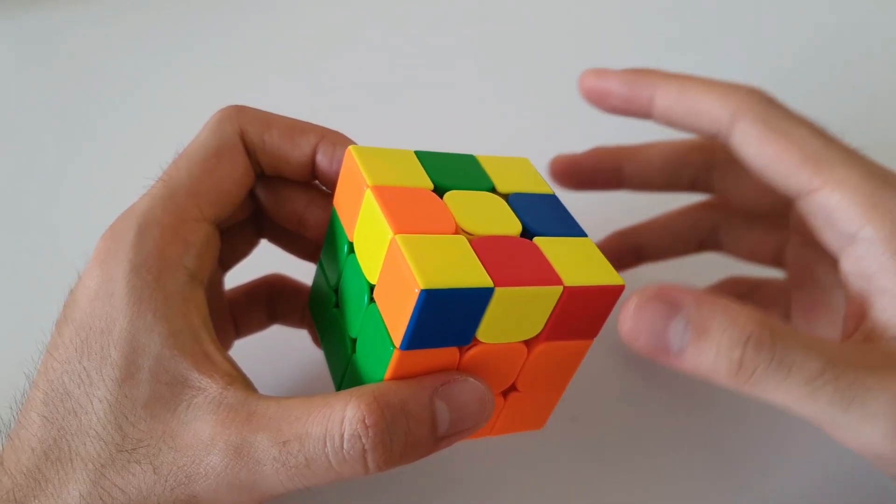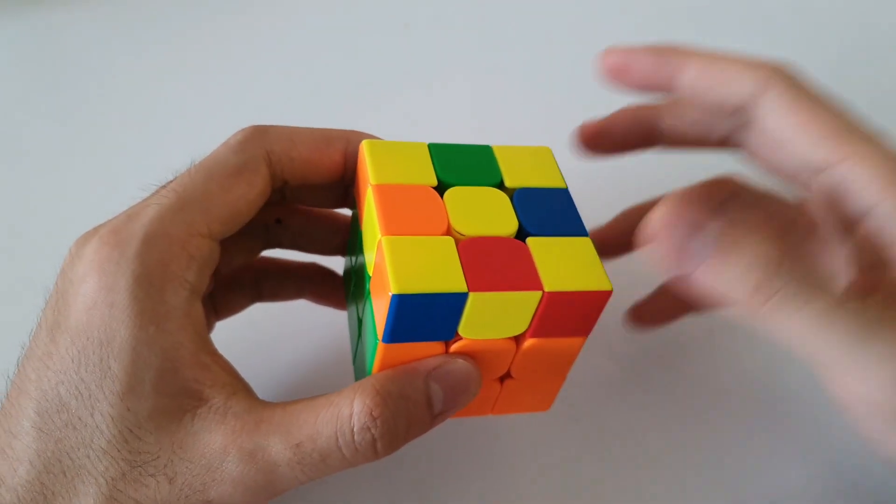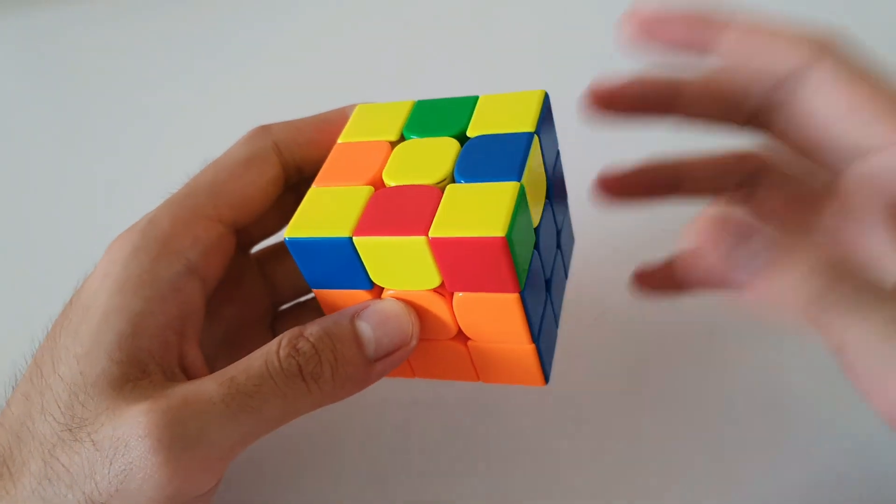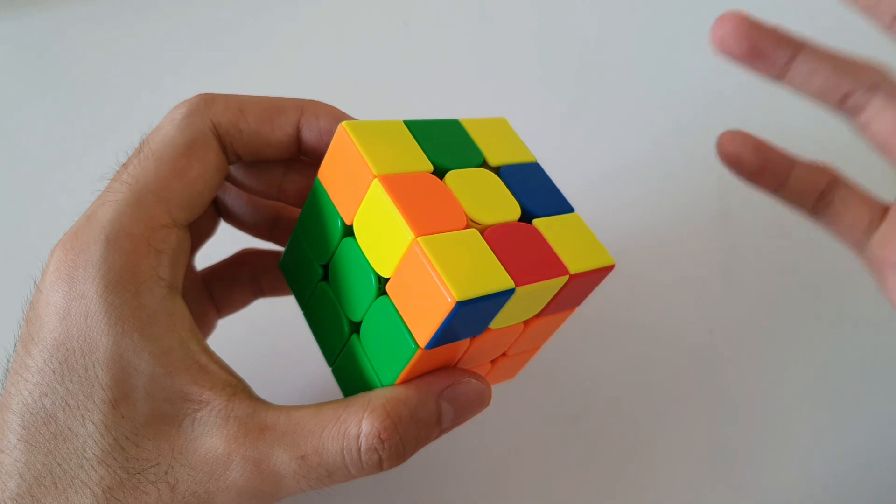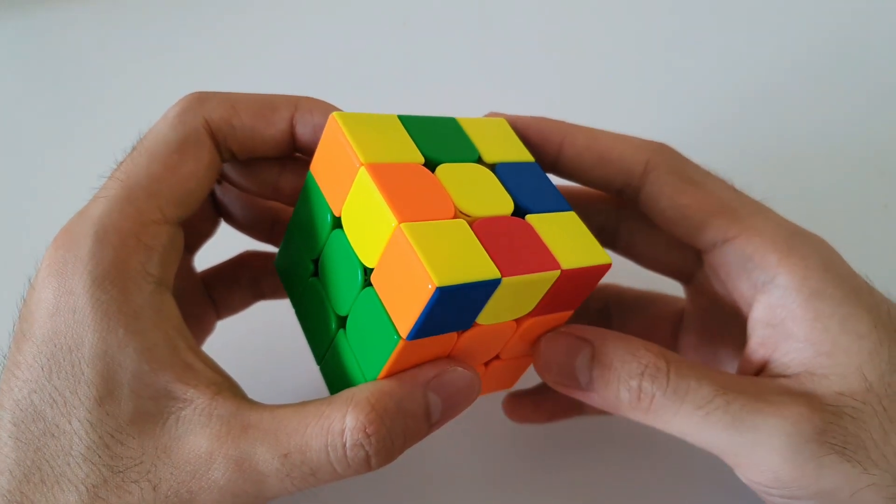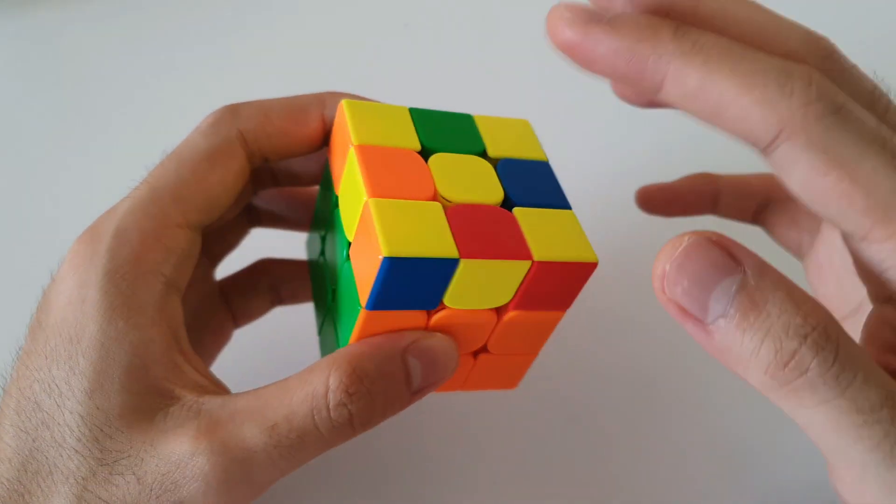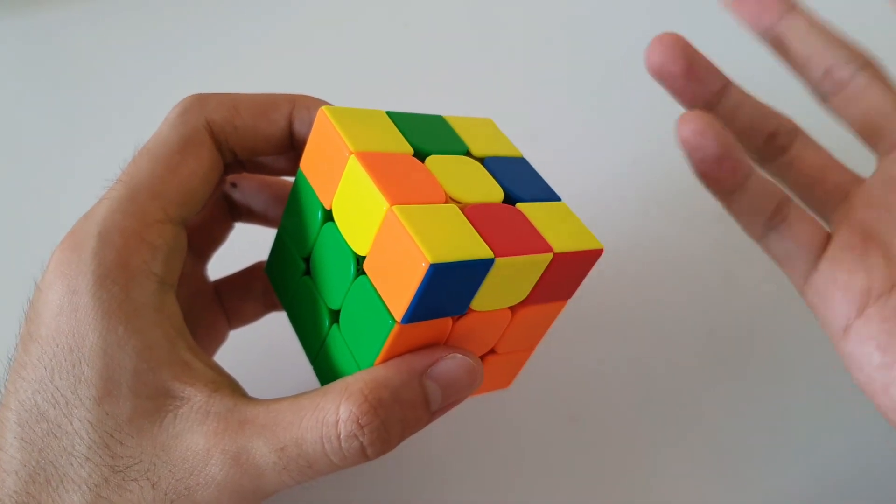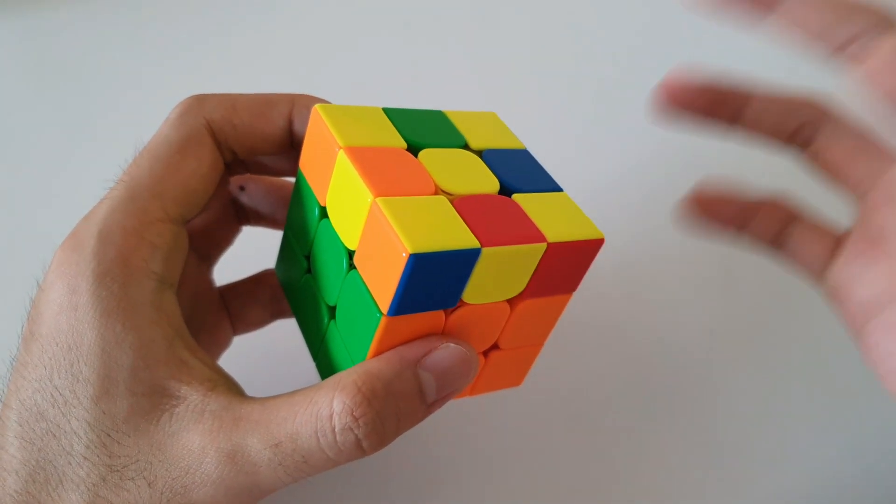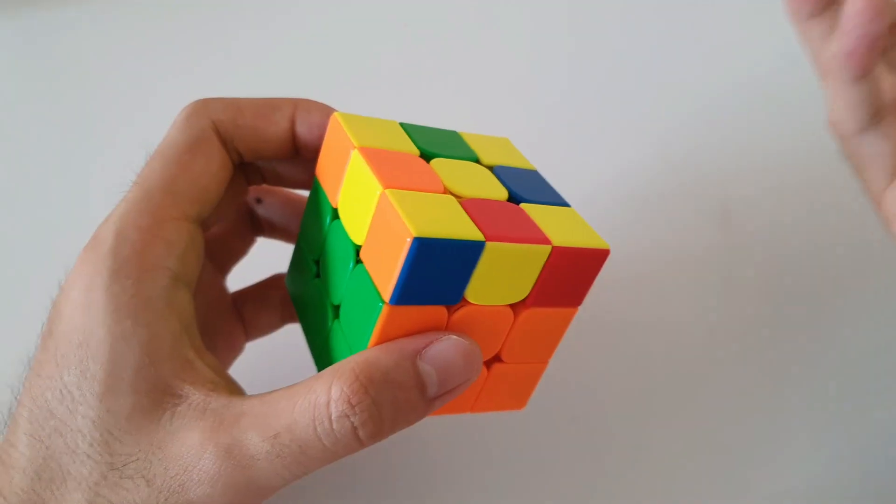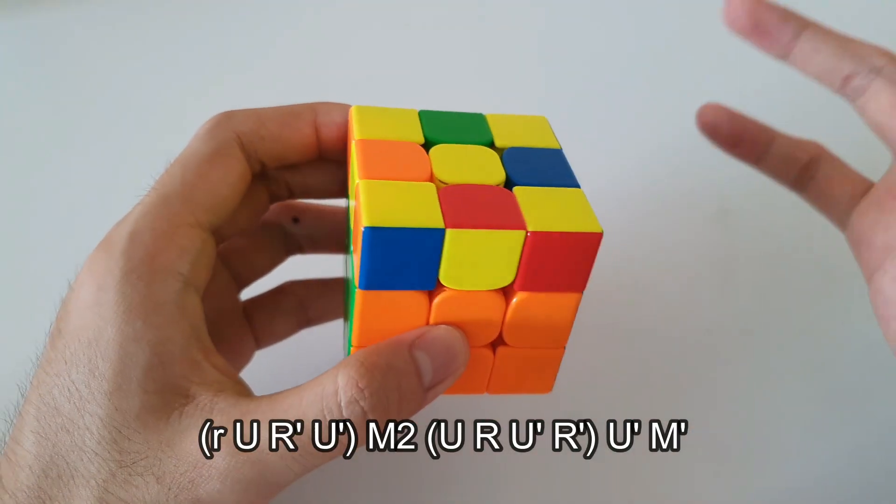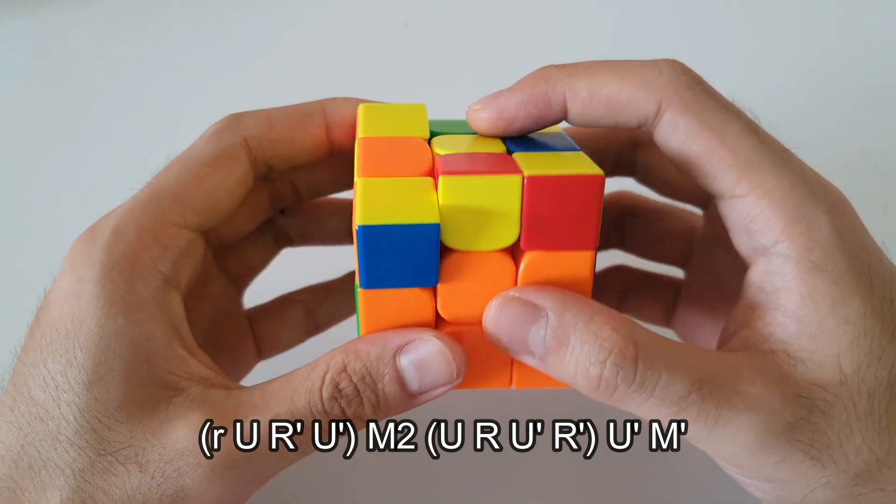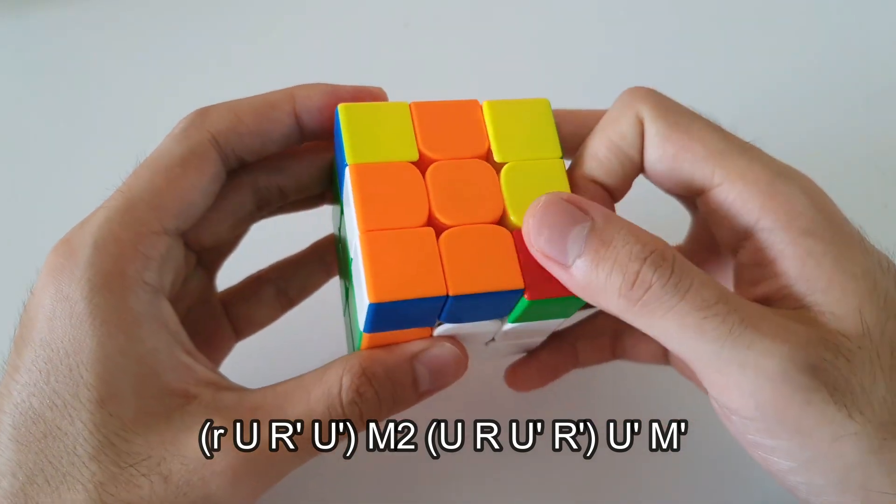So the final dot case is this one here. You may recognize it from the channel logo or you may not recognize it because you may not have actually seen this in an actual solve because this is also the rarest OLL. Nevertheless, you should know how to solve this case just in case it does pop up. So for this case, the algorithm is actually fairly straightforward.